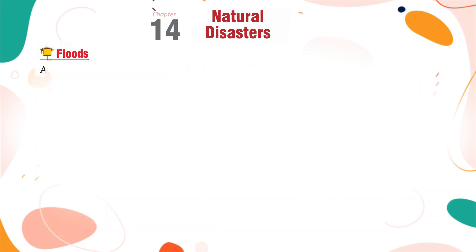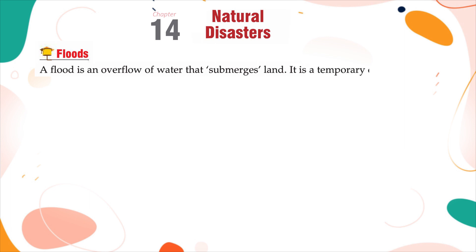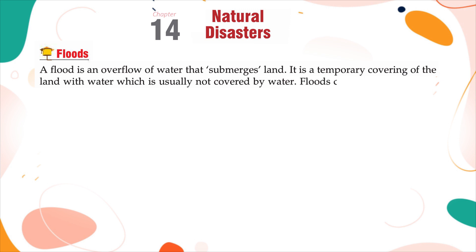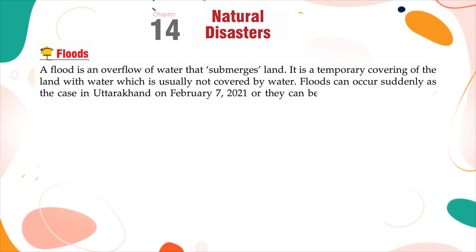Floods. A flood is an overflow of water that submerges land — a temporary covering of land with water, which is usually not covered by water. Floods can occur suddenly, as in the case of Uttarakhand on February 7, 2021, or they can occur periodically, as the Bihar floods in monsoon season.